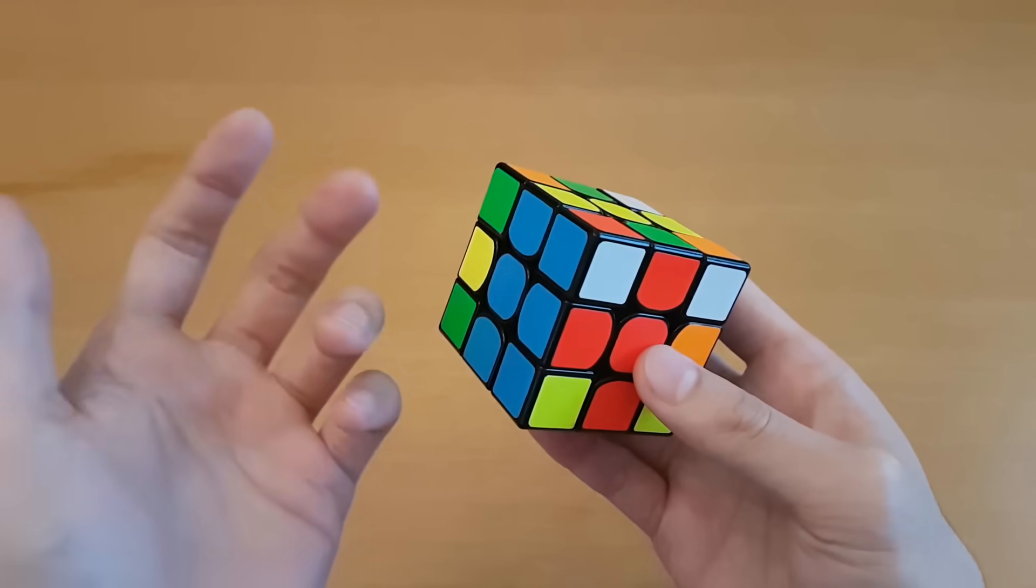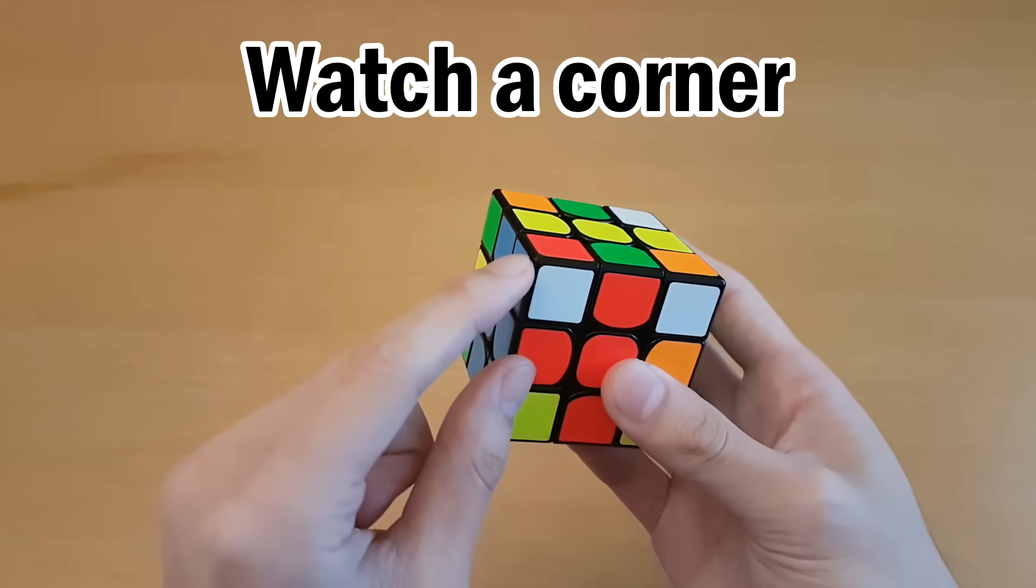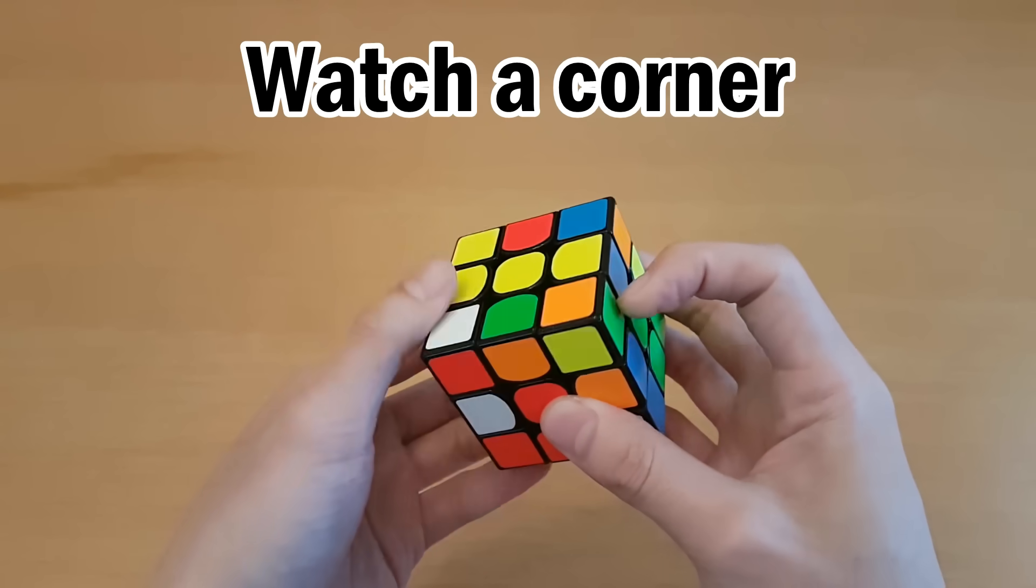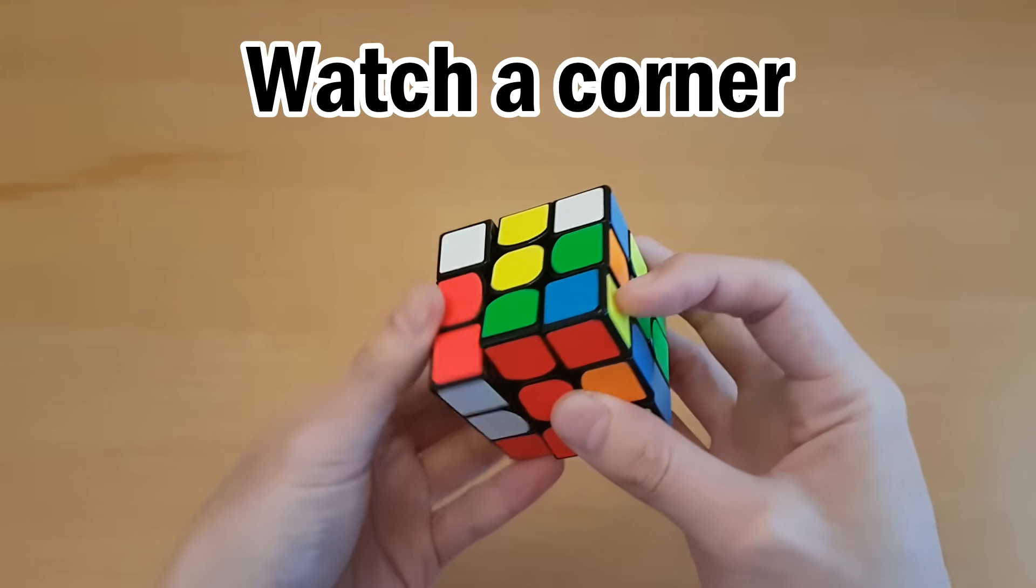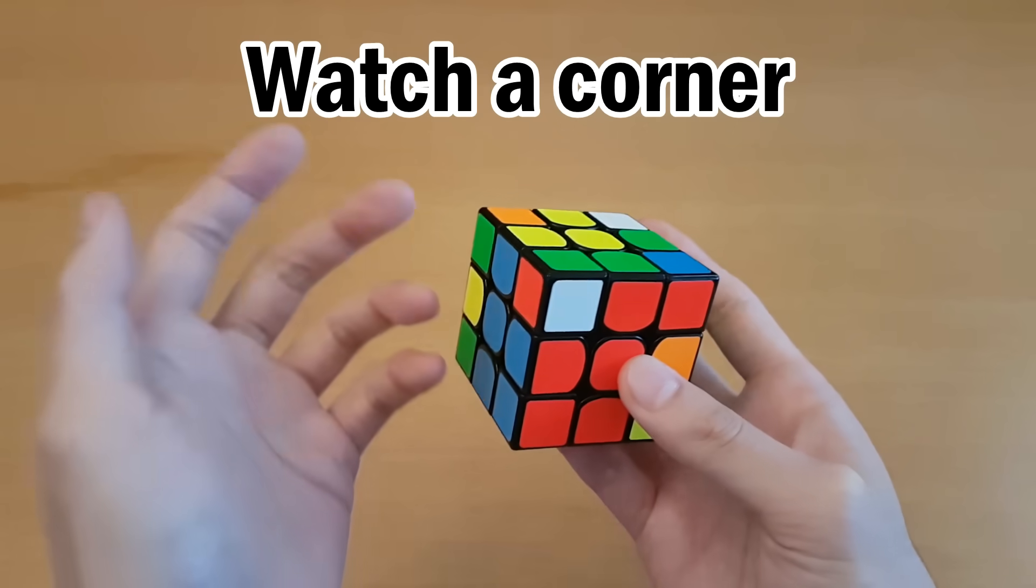So I'm going to try and look at other pairs while I solve this, and for now we're just going to fixate on a corner. So here I'm going to start pairing them up, and I'm going to look at this corner. So just watch the white sticker of it. And watch how I'm going very slow as I do that, and we see it ends up here. Not very hard to track if I go that slow.